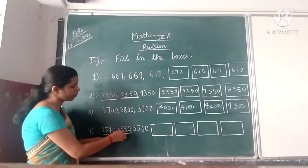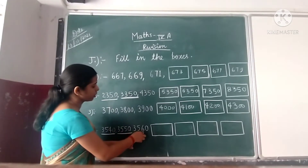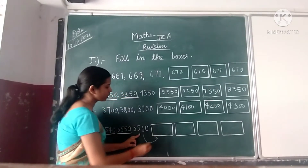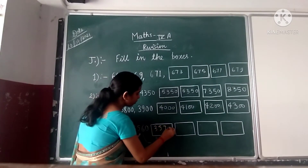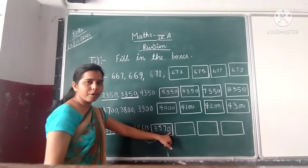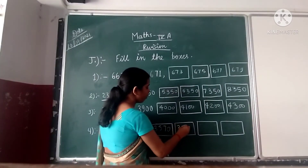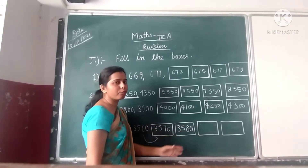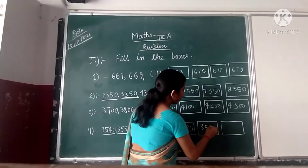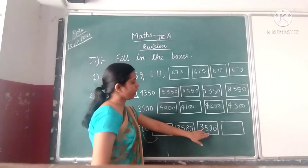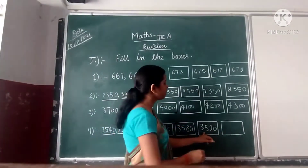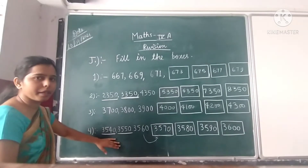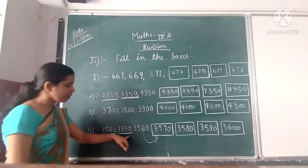When we add 10 in 3550 we get our next number 3560. When we add 10 in 3560 we get our next number 3570. When we add 10 in 3570 we get our next number 3580. When we add 10 in 3580 we get our next number 3590. In this series, when we add 10 in the previous number we get our next number.